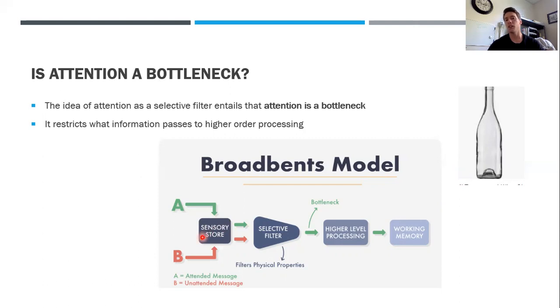Attention then chooses which of these two streams of information to direct higher-order processing to—things like working memory. In this case, it's filtering out the irrelevant information. You see the red arrow dies out here at the selective attentional filter. It does not pass on to higher-level processing.